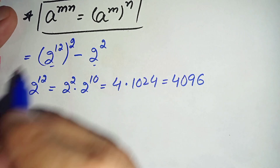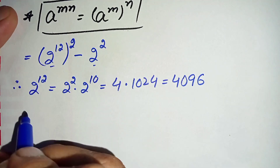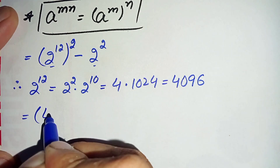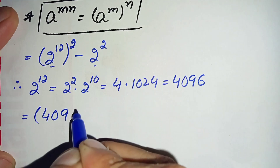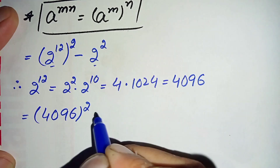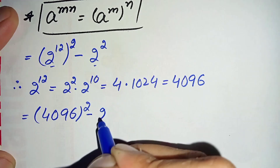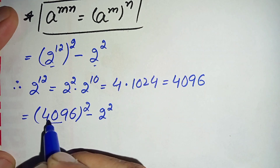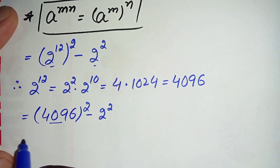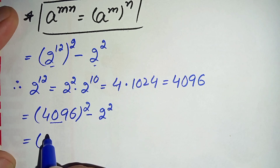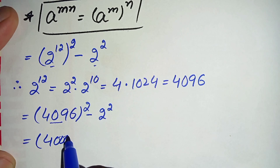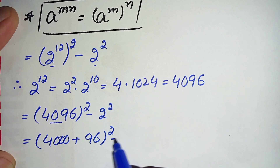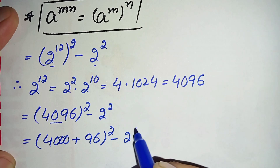Now we will replace 2 raised to power 12 with 4096. So this equation becomes 4096 whole square minus 2 square. We will change 4096 to the sum of 4000 plus 96, so this becomes 4000 plus 96, whole square, minus 2 square.